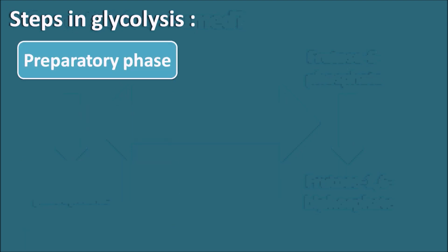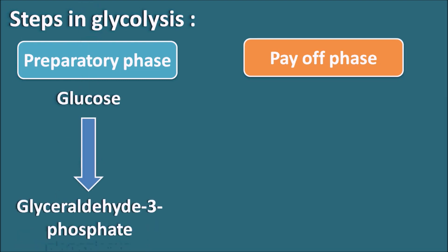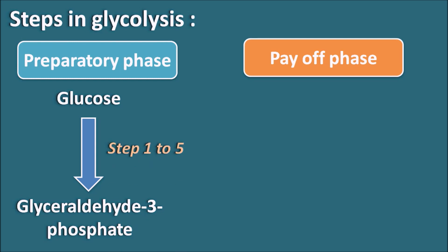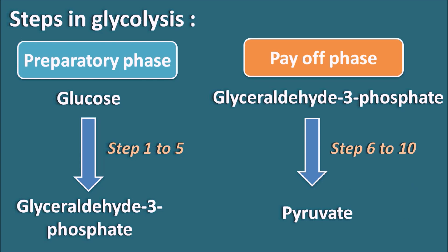The steps in glycolysis can be classified into two phases. The first is the preparatory phase, which involves the conversion of glucose to glyceraldehyde-3-phosphate — the C6 molecule coming to a C3 molecule — and this involves steps 1 through 5. The second is the payoff phase, where glyceraldehyde-3-phosphate is converted into pyruvate, involving steps 6 through 10.